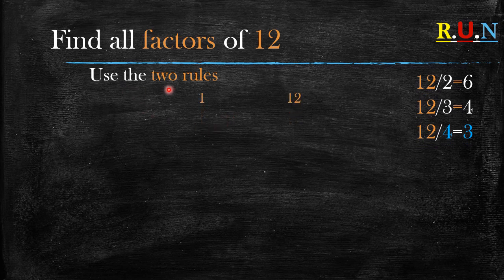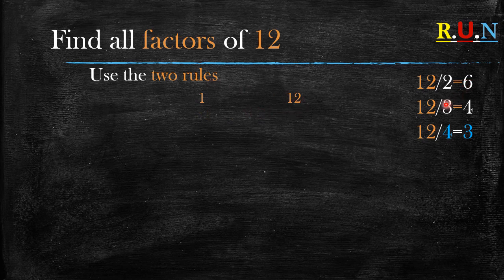So we use two rules. Rule number one: we write 1 and the number of which we are asked to find factors of. So in this instance it's 12, so we write 1 and then space and then 12. Rule number two is to start looking for numbers that divide exactly into 12 without a remainder.